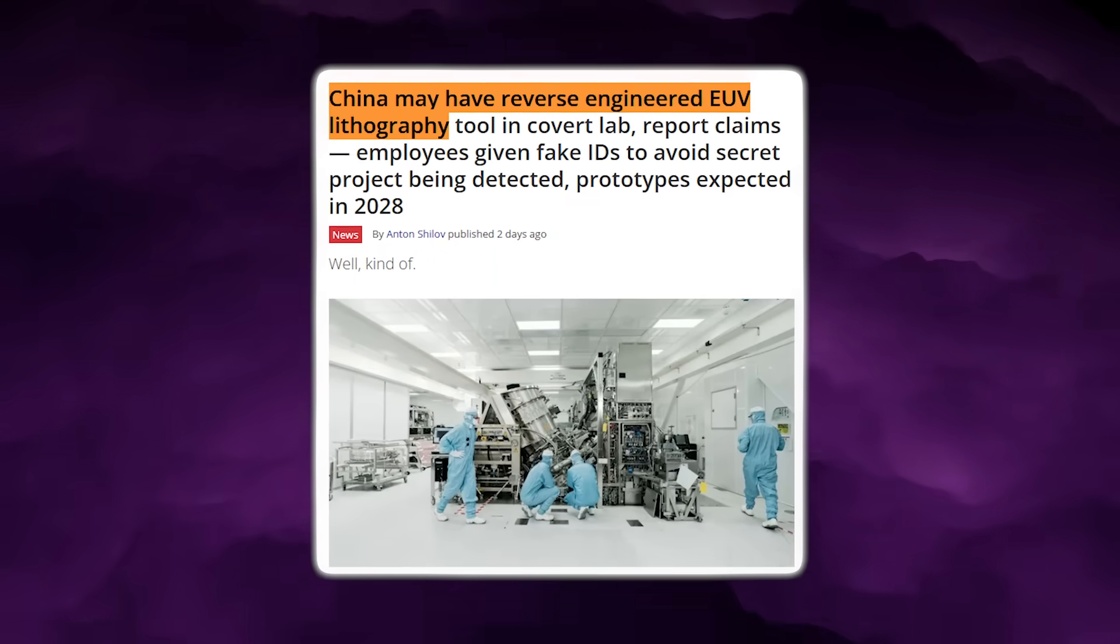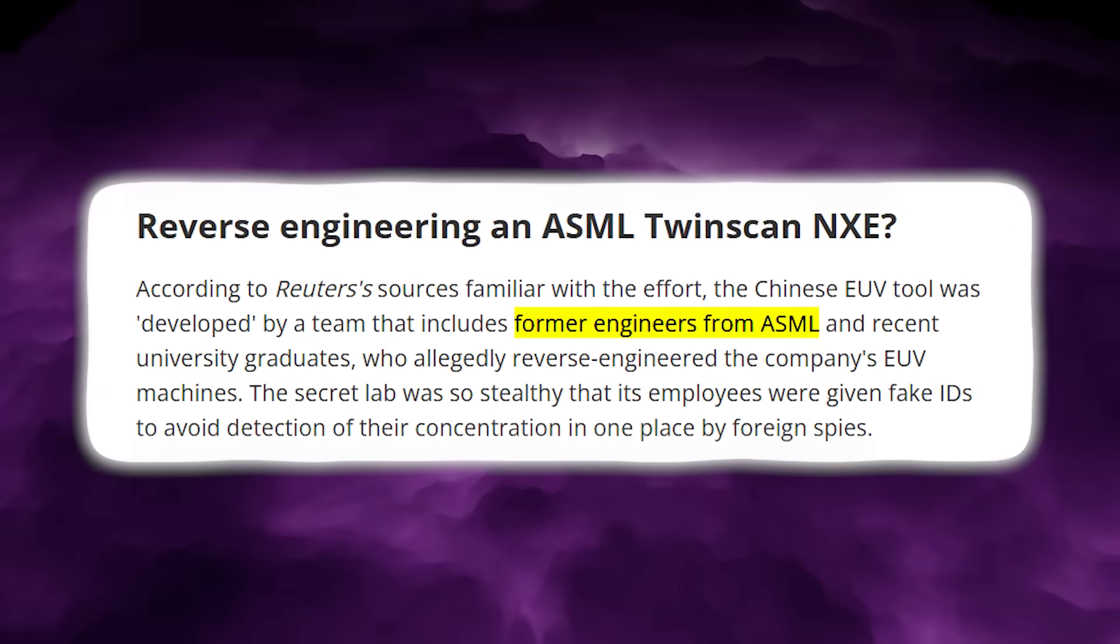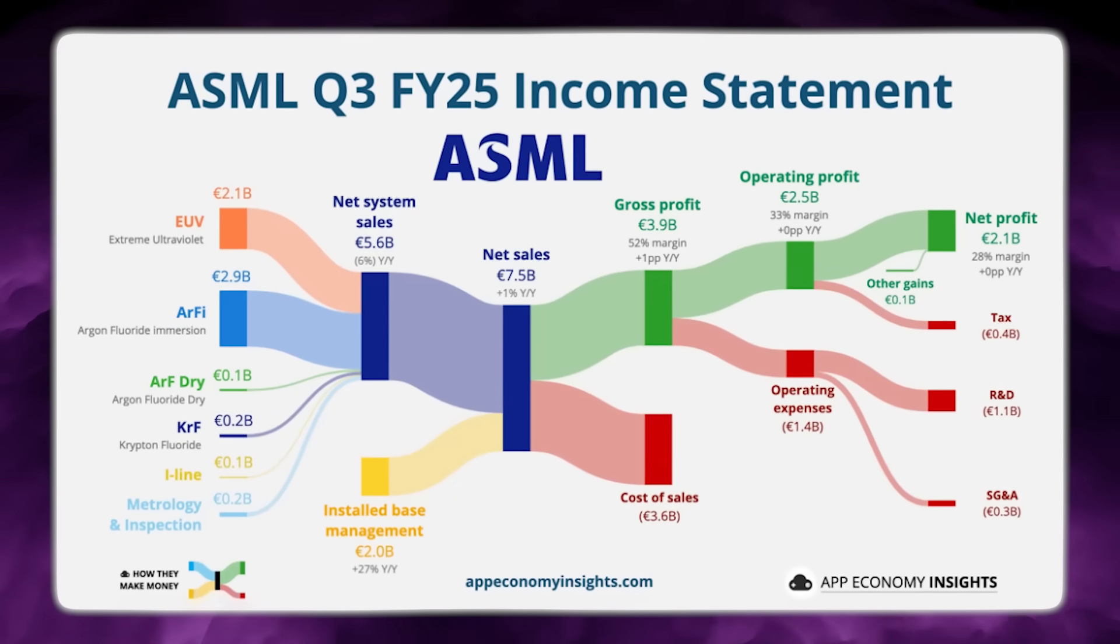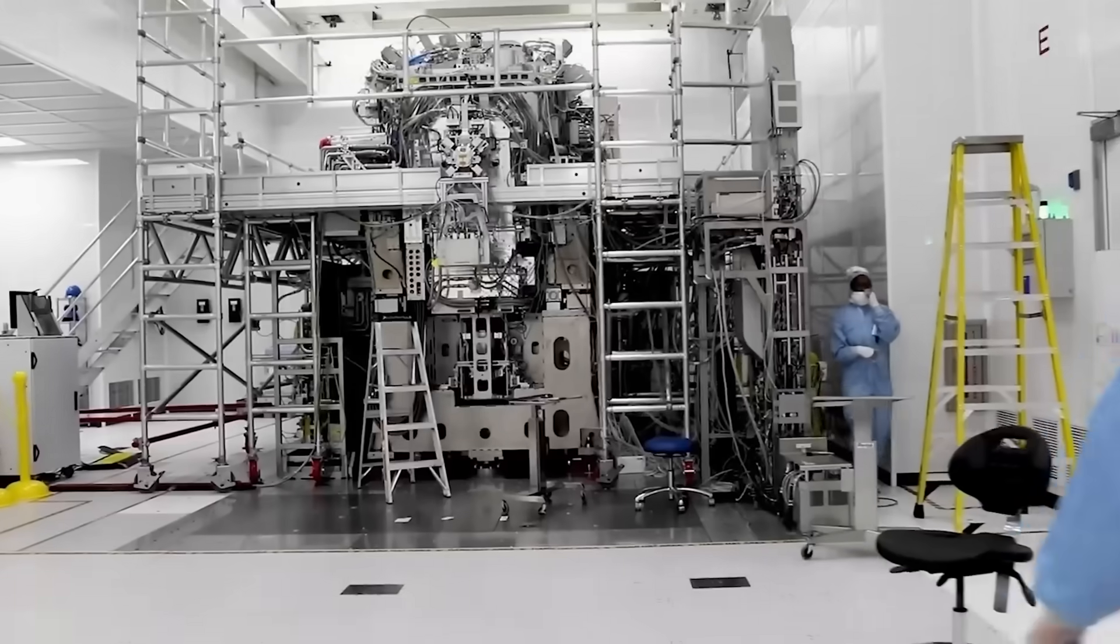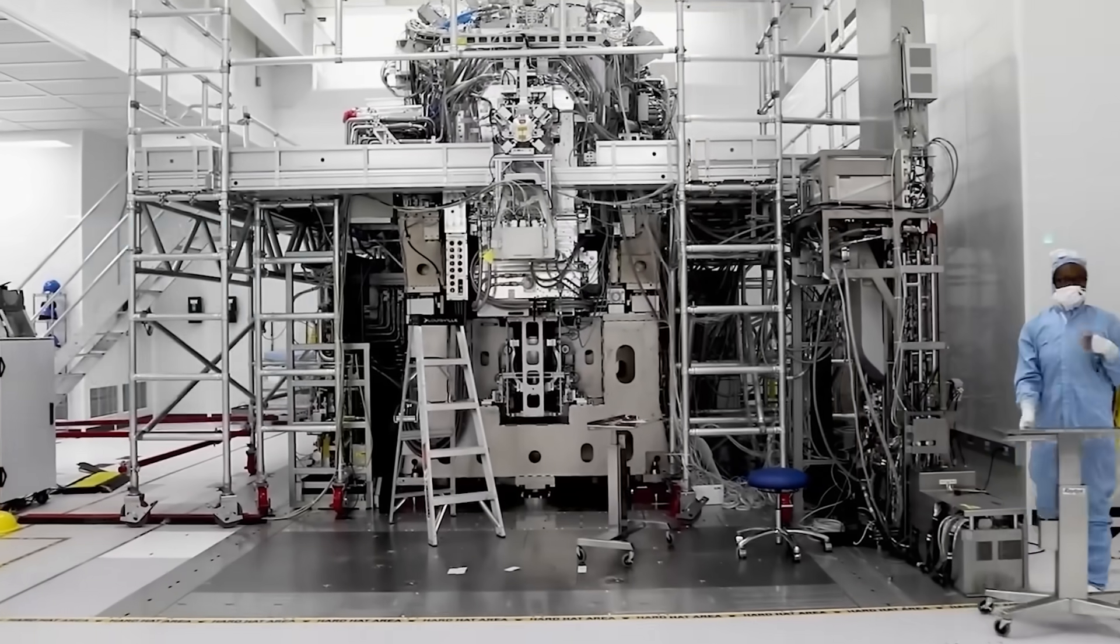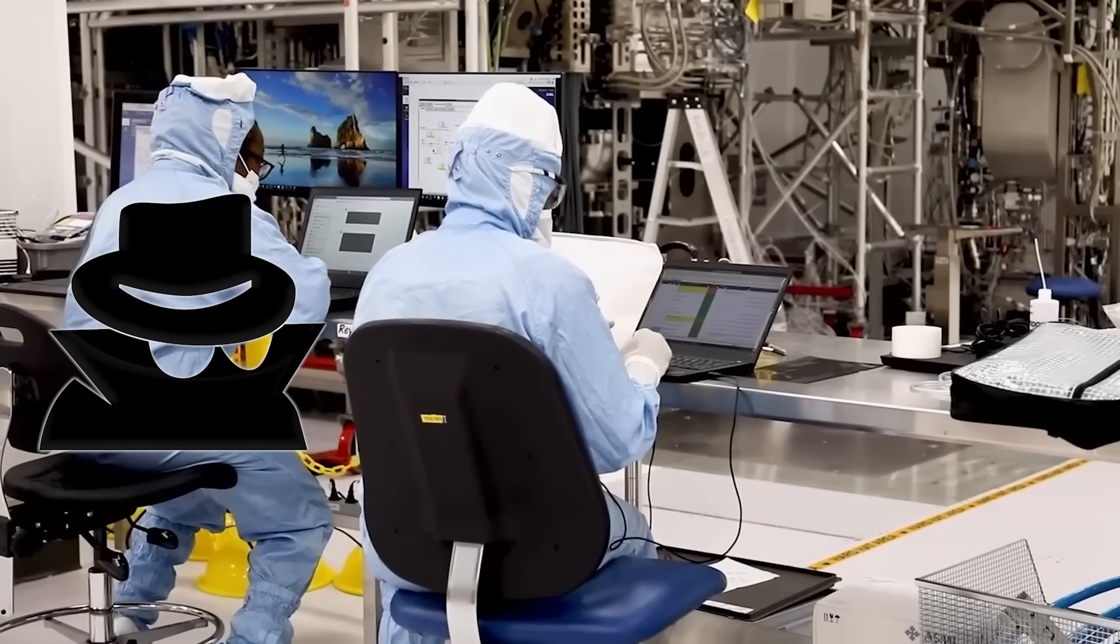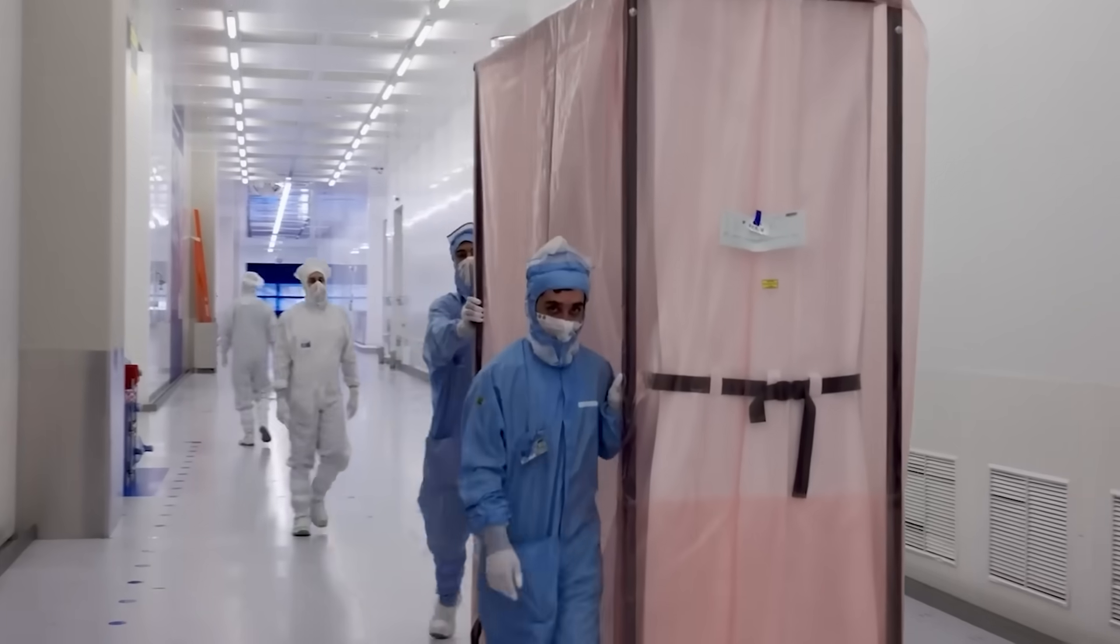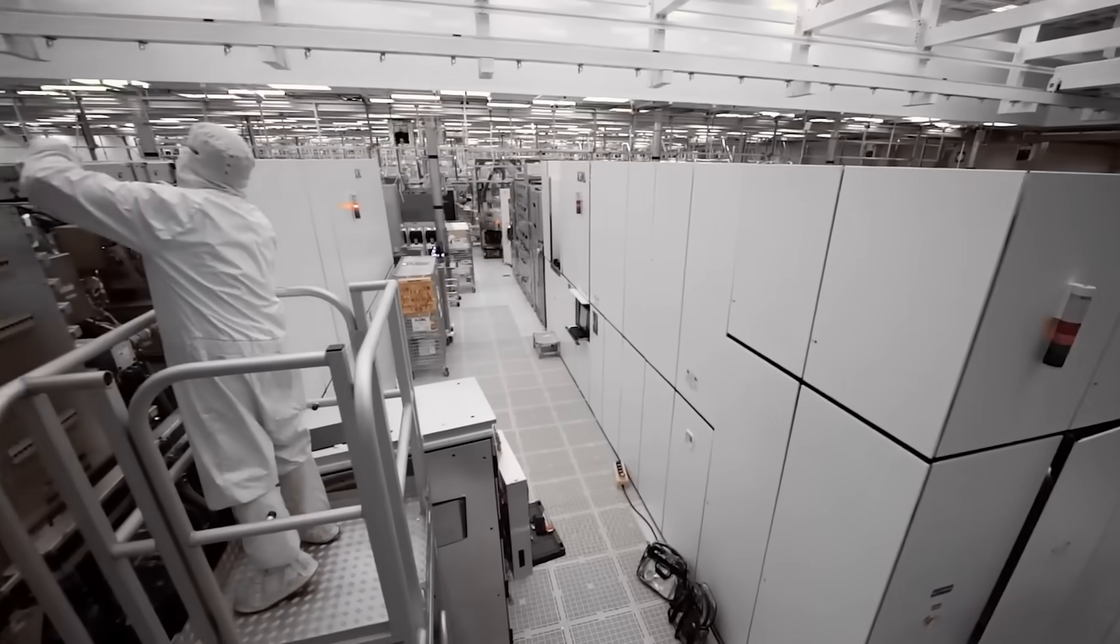This is not a rumor or an internet exaggeration. Reuters describes a system built by a team that includes former engineers from ASML, the Dutch company that holds the global monopoly on EUV technology. Even more striking is the level of secrecy surrounding the project. Engineers were reportedly issued identification cards under false names and instructed to use aliases even inside the facility. The project is classified under national security, with strict compartmentalization and isolation between teams.